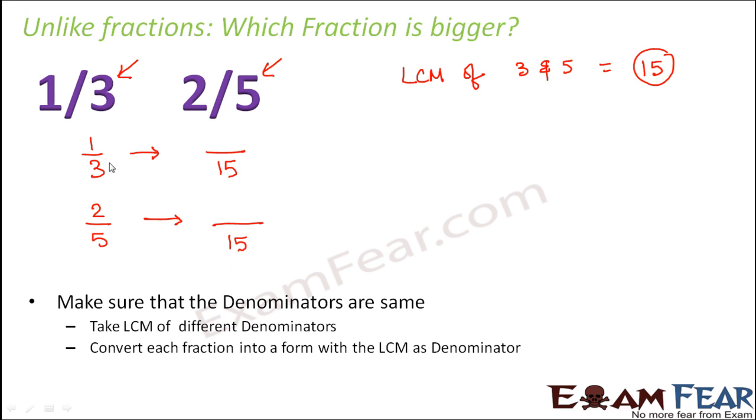Similarly to convert 2 by 5 into a form where the denominator is 15. So now what is that number which when multiplied by 3 gives 15? 5. So we will also multiply the numerator by 5. So this becomes 5 by 15.